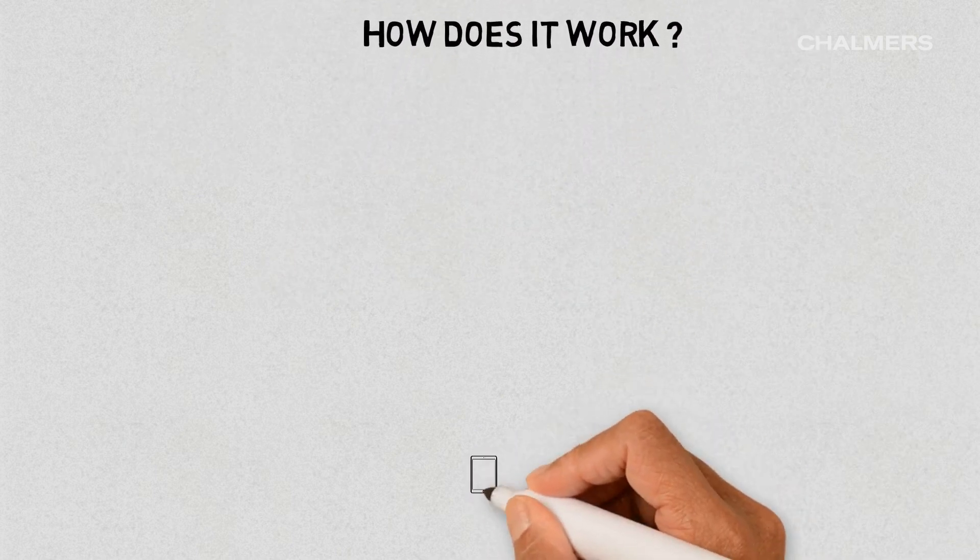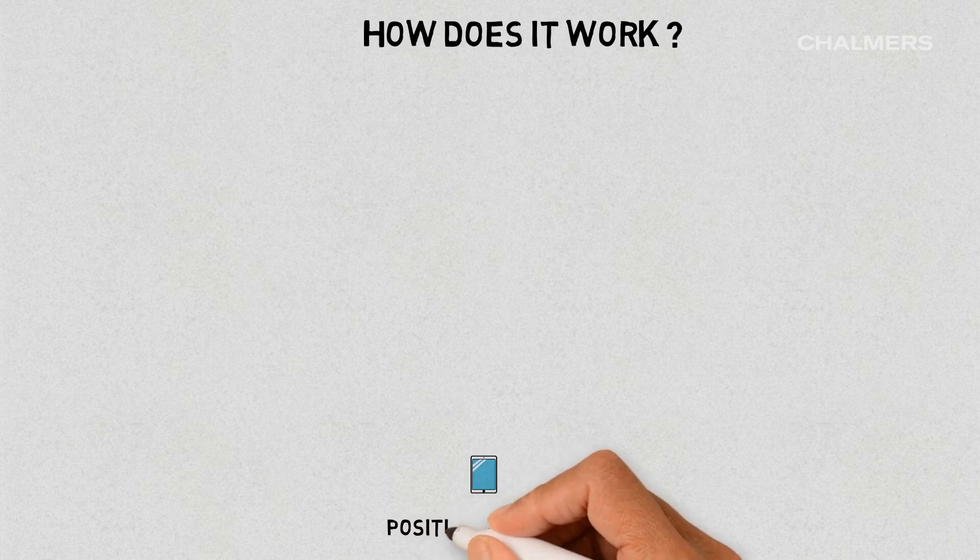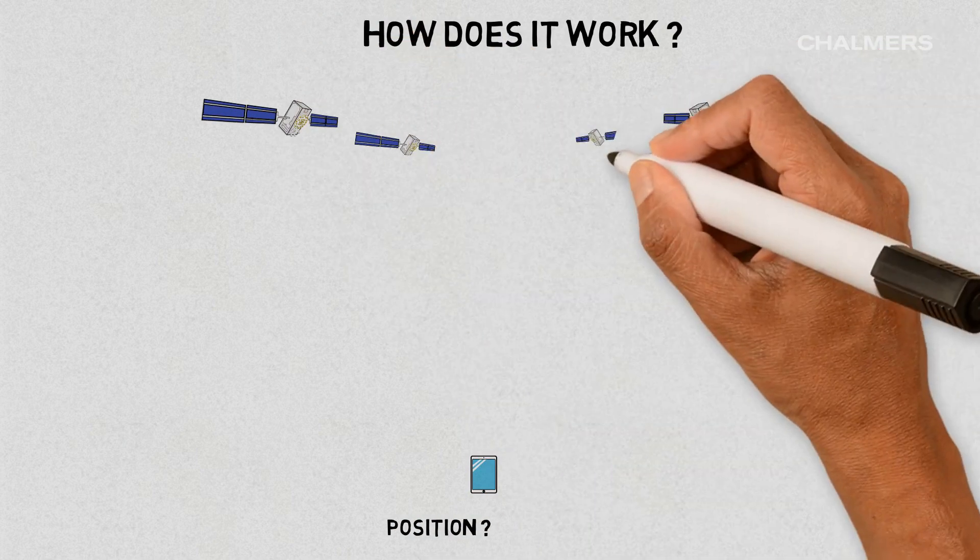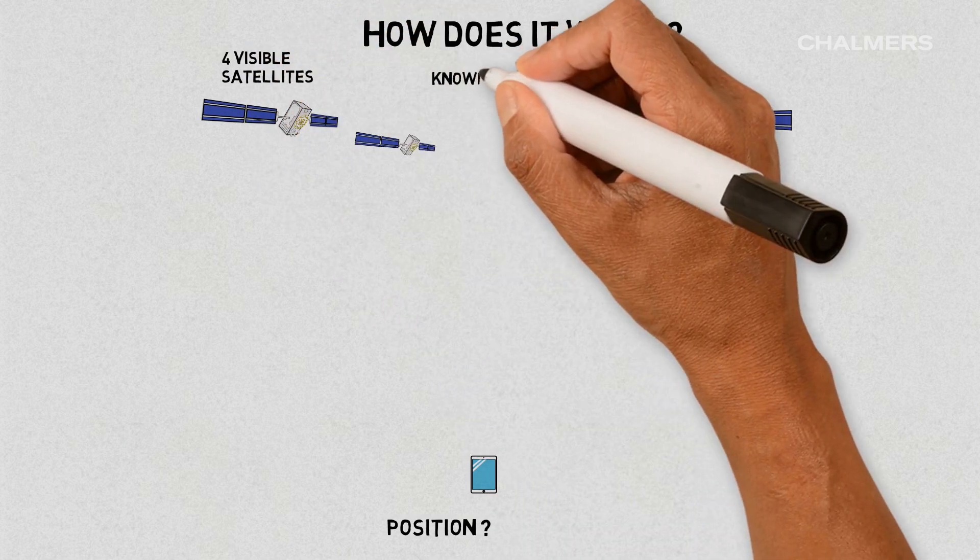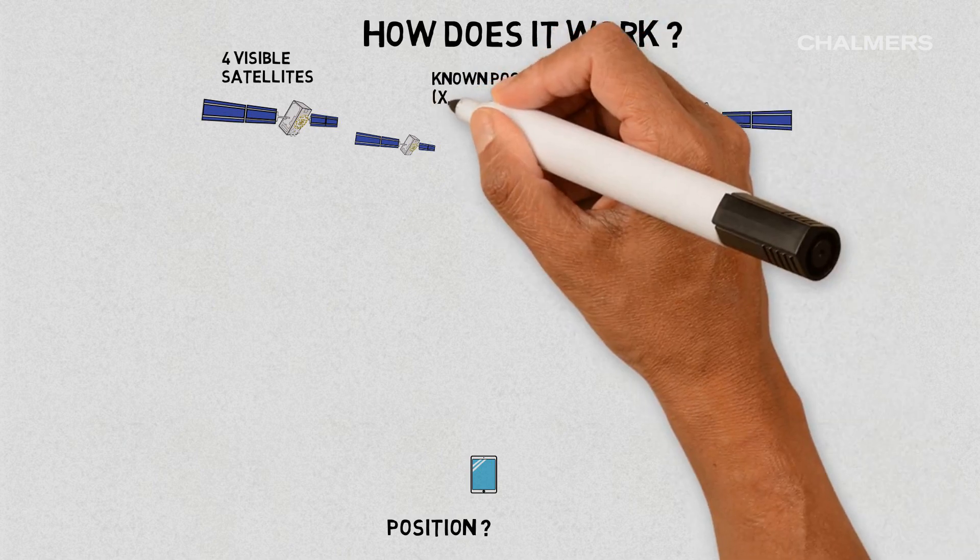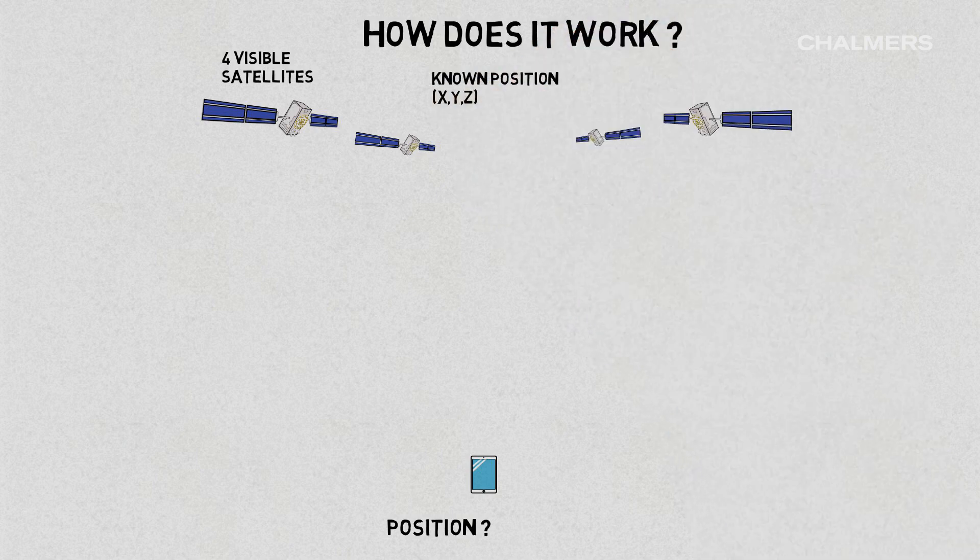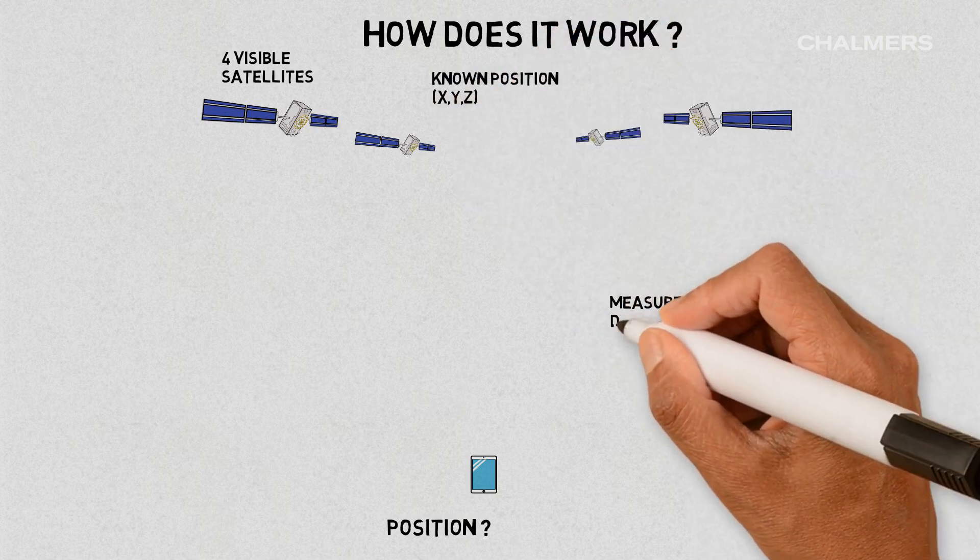Well, the position of your mobile phone, the receiver, is determined with the use of satellites in outer space. For that, at least 4 satellites need to be visible. Because the exact location of the satellites is known, the receiver can figure out its own position based on the distance that it measures to all visible satellites.